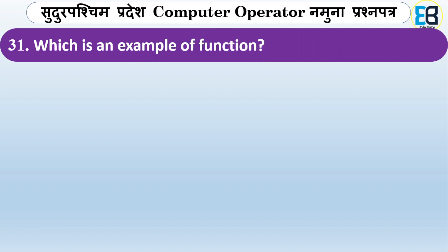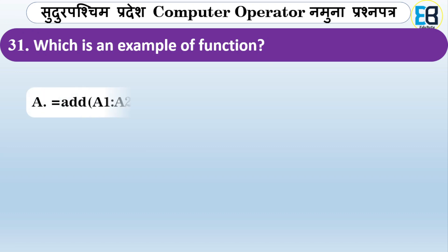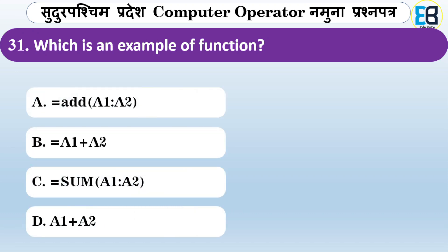Which of the following is an example of a function? Options are =A1+A2, =SUM(A1:A2). The correct answer is option C — =SUM(A1:A2) is an example of a function using the SUM formula.